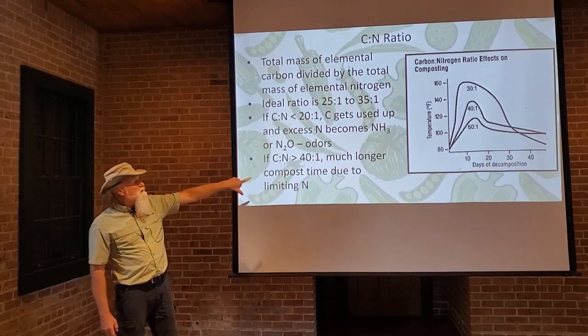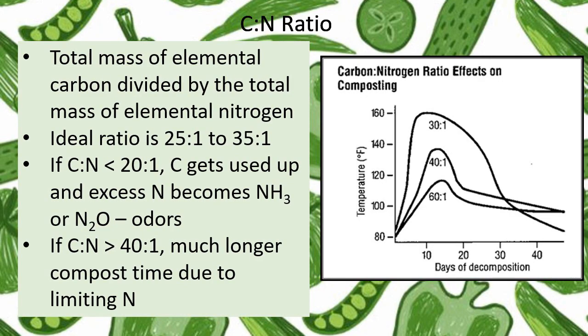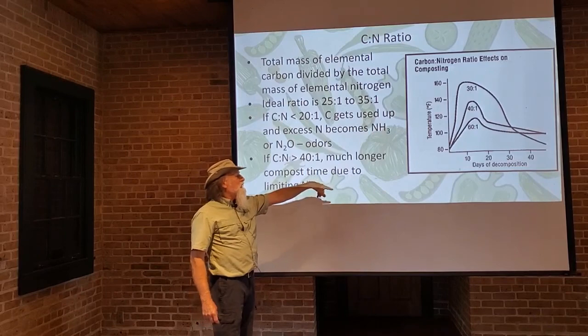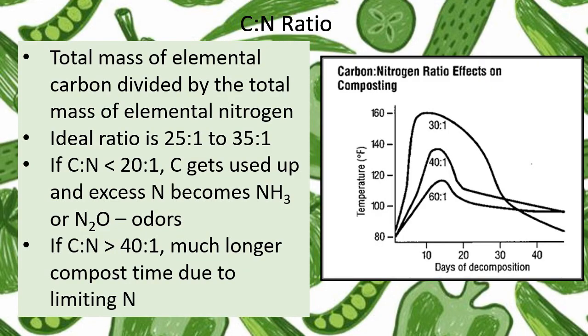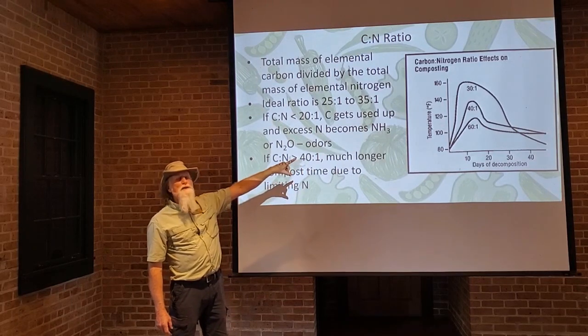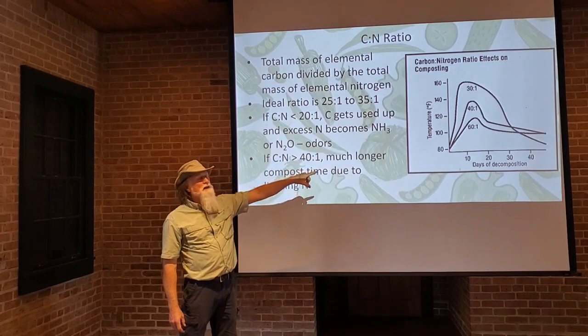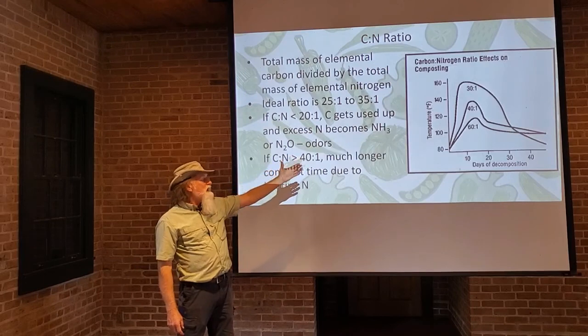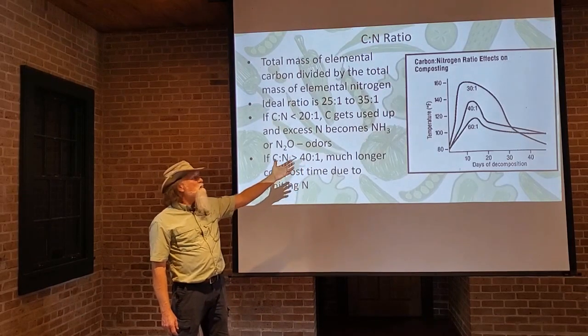This graph is a really important one to see, because now we're looking at the ratio of carbon to nitrogen and how that affects our compost pile. You can see on the bottom: days of composition, the temperature reached, and the different ratios. If you have a 60:1 ratio of carbon to nitrogen, it doesn't heat up to the temperatures we want, and it takes a long time to break down because with that much carbon, the nitrogen is limiting. As we go up to 40:1, we're getting closer to a pretty good ratio.